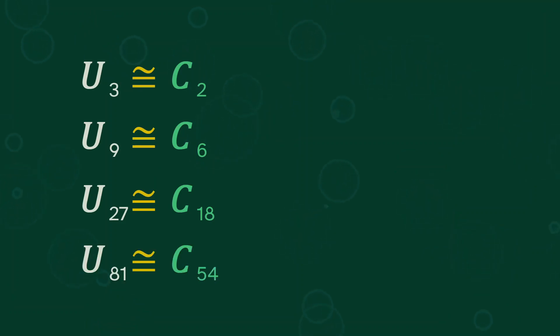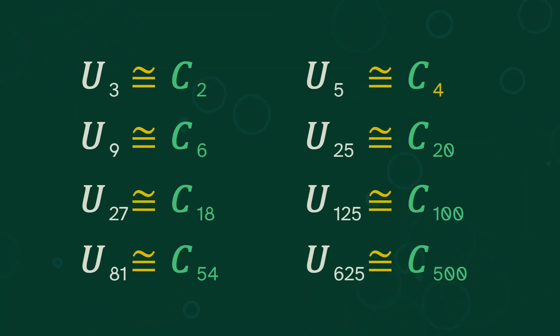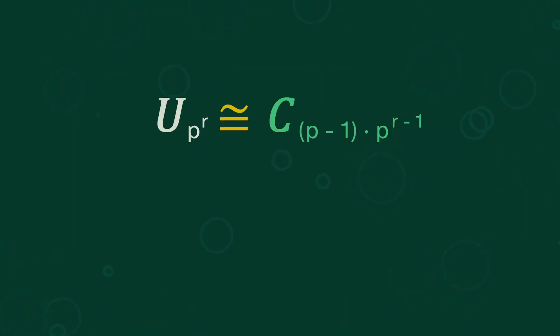Let's look at some examples. U3 is a 2 cycle. U9 is a 6 cycle. U27 is an 18 cycle. And U81 is a 54 cycle. We start with 2, and then at each step, multiply by 3. We see something similar with the powers of 5. We start with 4, and then multiply by 5. And this pattern follows in general. U of P to the R is a cycle of size P minus 1 times P to the R minus 1. We start with P minus 1, and then continue multiplying by P. But unfortunately, this only works when P is odd.